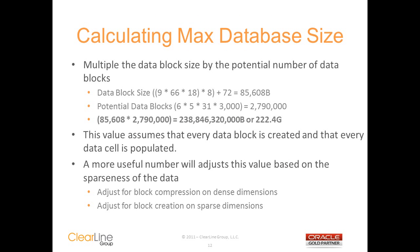You can now calculate the maximum size of the cube by multiplying the data block size by the potential number of data blocks. In this case, you'd have a database with a maximum size of 222.4 gigabytes. This assumes that every block is created and that every cell is populated. This is about as far as the DBA guide or the database statistics can take you. In reality, your cube will be only a small fraction of this number, so you'll need to adjust the size of your cube based on the sparseness of the data. You'll need to make some assumptions on the average number of cells being compressed out on the dense dimensions and about block creation on the sparse dimensions.